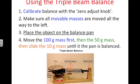For actually finding the mass, first you move the 100g mass, then the 50g mass, and last you slide the 10g mass into place. You can read the mass of the object on the pan from these three masses.